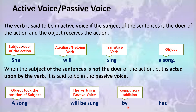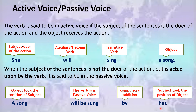'By' is the compulsory addition that you always make in a passive voice sentence. 'Her' is the subject which has taken the position of the object — 'she' was the subject in the active sentence, but it has been moved to the end and its form has been changed accordingly.